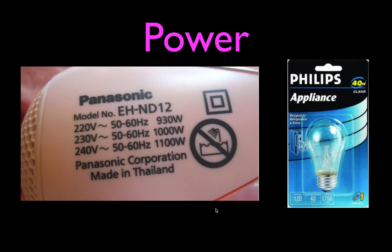Most people have seen and heard of watts in everyday life. Here's a hairdryer — it has different power ratings depending on whether it's plugged into a 220, 230, or 240 volt outlet: 930 watts, 1,000 watts, and 1,100 watts. A higher wattage means it converts electrical energy into heat at a faster rate — for example, 1,100 joules per second. Most people have also seen watts on light bulbs. This 40-watt light bulb converts 40 joules of electrical energy into light and heat every second.